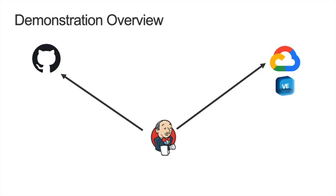This is a very simple diagram that describes what's going to go on here. We've got GitHub where we're going to have our code, and we've got our virtual editions running in Google. Jenkins does the work of pulling the code from GitHub in a pipeline and pushing it out to a virtual edition running in Google. It's a very simple automated process to pull code from GitHub and push it out to a virtual edition — you'll see the application get built. We also have another pipeline that destroys or removes the application from the BIG-IP.